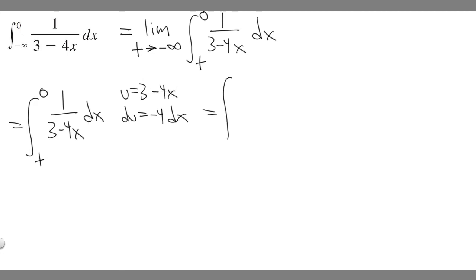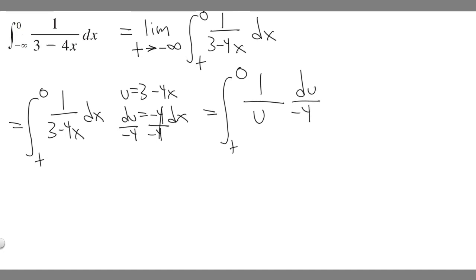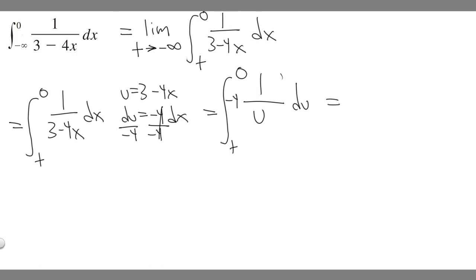So let's rewrite our integral and replace three minus four x with u. So we have one over u, and then dx — if we divide both sides by minus four, dx is equal to du over minus four. So we can move that out front. So we have minus one over four times one over u.